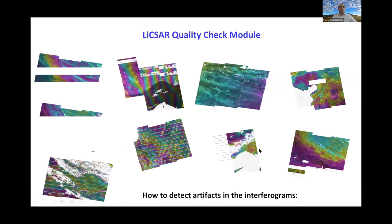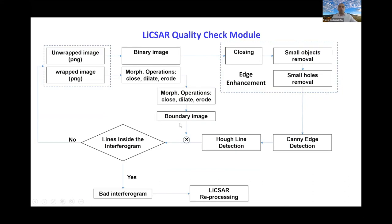Like any other automatic system that provides services to end users, we developed a quality check module to make sure that the interferograms are correctly generated. The quality of the LICSAR products can be affected by a number of factors, such as missing bursts in the data, temporal decorrelation happening mainly in highly vegetated areas, or some processing issues. There would be some products that do not meet the necessary qualification and should be removed from the system. You can see some examples of these bad interferograms in these figures. We developed a two-step quality check module to identify these interferograms automatically.